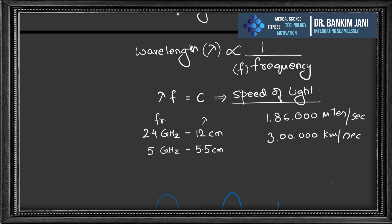For example, if the frequency is 2.4 GHz — and 2.4 GHz and 5 GHz are very important frequencies, especially in wireless — the wavelength is 12 centimeters. When it comes to 5 GHz, the wavelength is 5.5 centimeters, which is smaller.